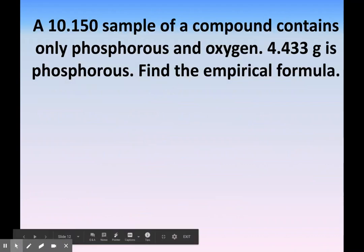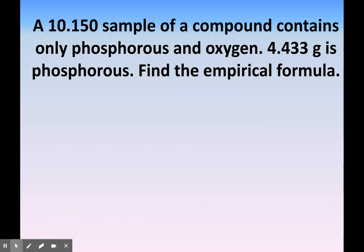Here we have a 10.150 sample of a compound and it only has phosphorus and oxygen. If we know that 4.433 grams is phosphorus, find the empirical formula. So phosphorus is 4.433 grams, and the rest is oxygen, so 10.15 minus 4.433 gives 5.717 grams of oxygen.